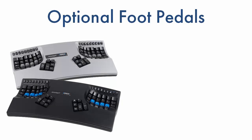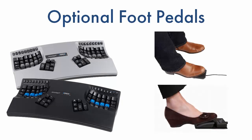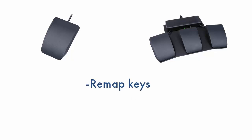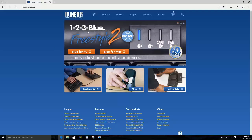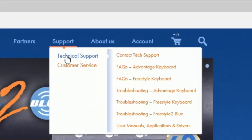You can also combine the Advantage keyboard with an optional Advantage foot pedal to offload work from overused fingers and hands. Use a single or triple action pedal as an extension of the keyboard to remap keys, trigger macros, or activate the keypad layer. To learn more about Kinesis products or find a dealer, please visit Kinesis.com.